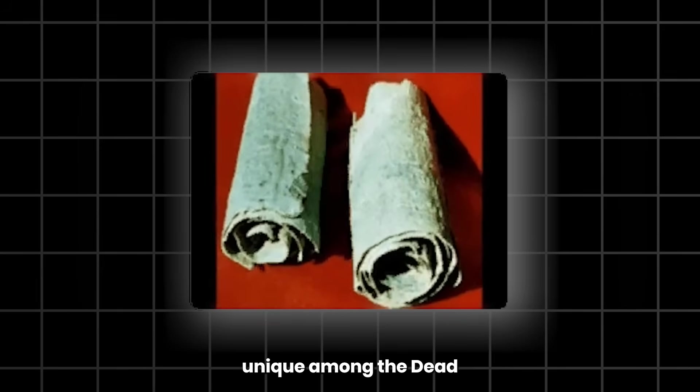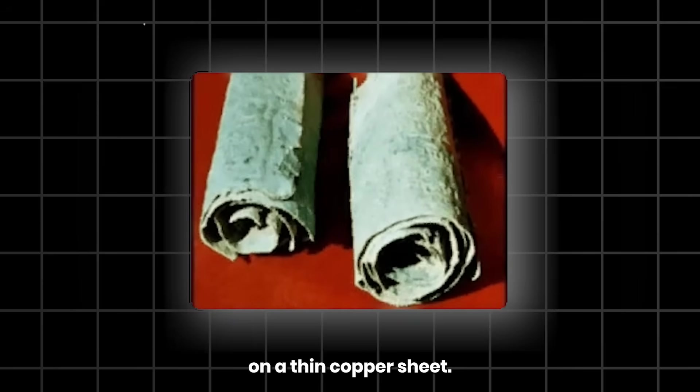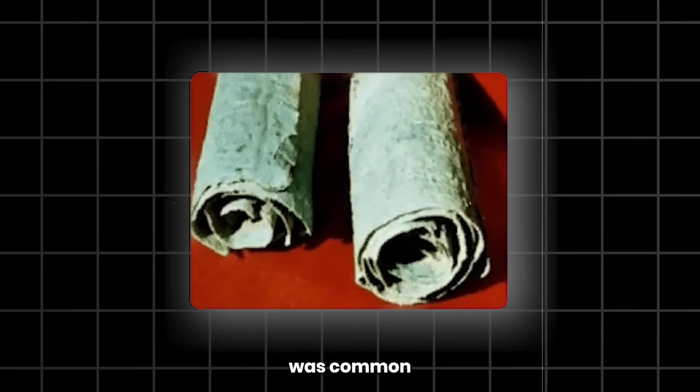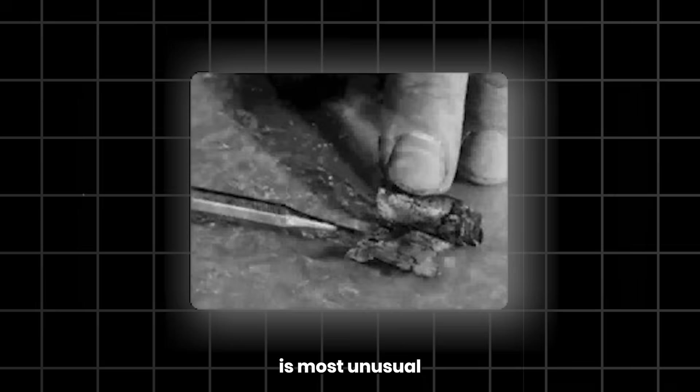The Copper Scroll is unique among the Dead Sea Scrolls because its text was carved on a thin copper sheet. This method of writing was common in the ancient world. However, such a large scroll written in this manner is most unusual.